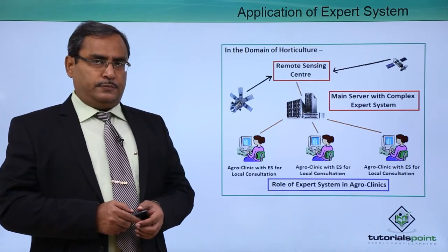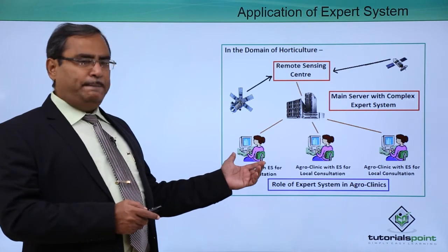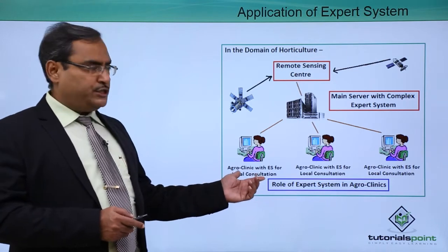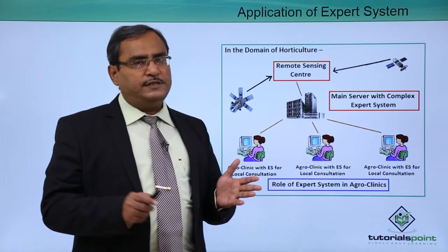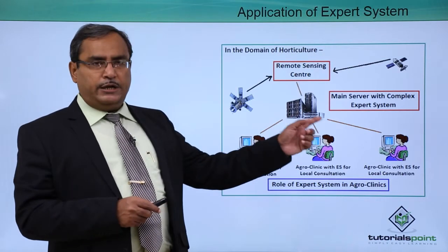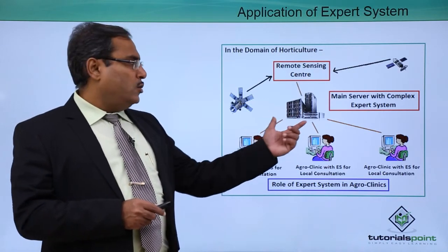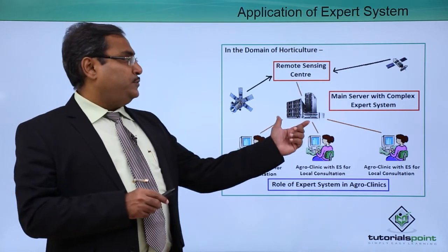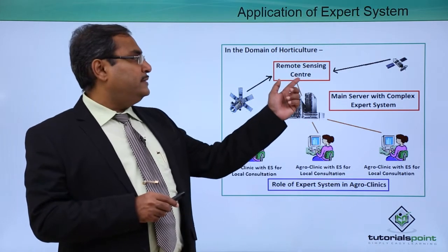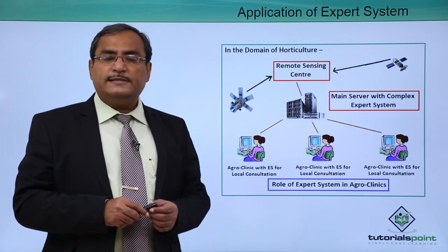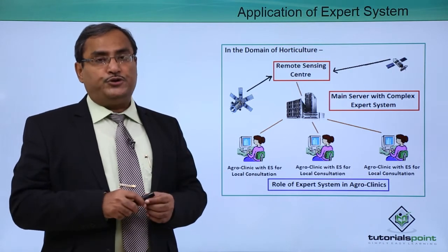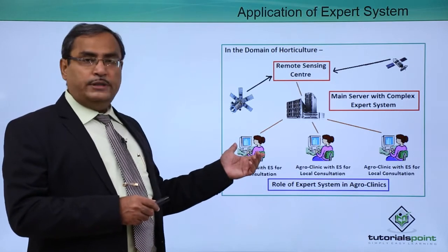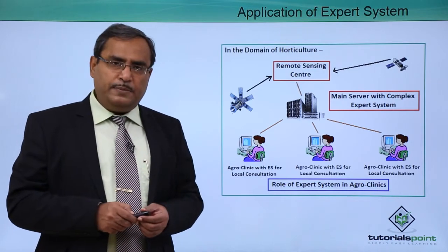In the domain of horticulture, this diagram depicts an agro clinic with an expert system for local consultation. Different counters and offices are communicating and connected with a main server with a complex expert system. Such main servers are connected with remote sensing centers linked to different satellites for getting information from different zones and locations. This shows how expert systems can be applied in the domain of horticulture.